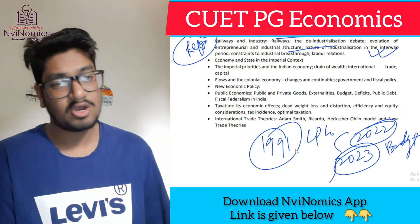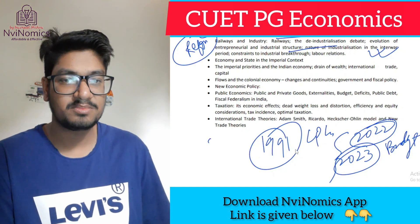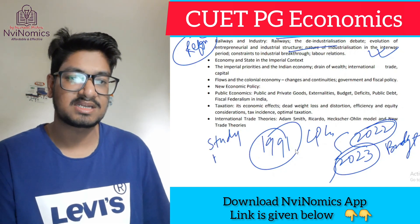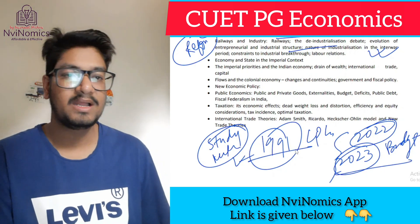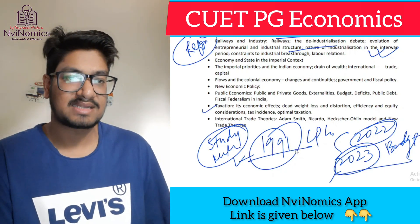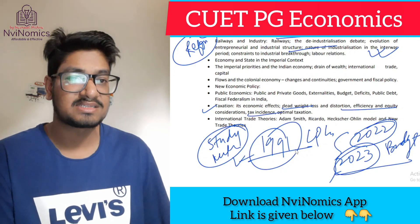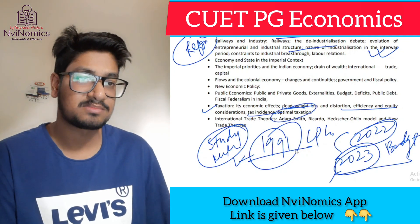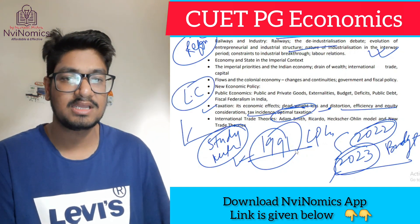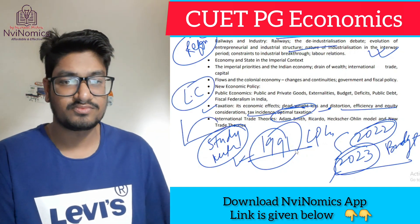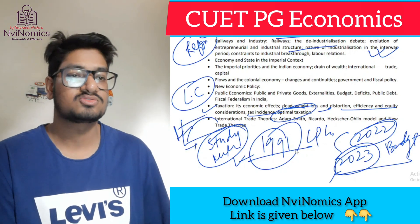For all these notes, go to the Navinomics app — link is below — in the study material section. All free notes are uploaded there. In taxation: know types of taxes, tax distortion, tax incidence, canons of taxation, and optimal taxation. With optimal taxation, you can also study the Laffer curve — if you increase the tax rate, revenue first increases then decreases.